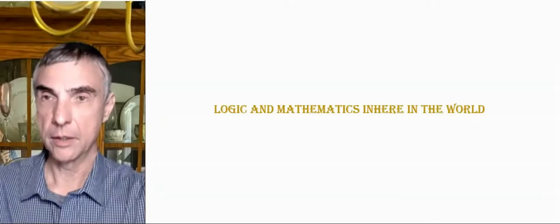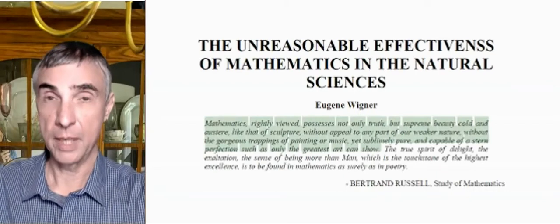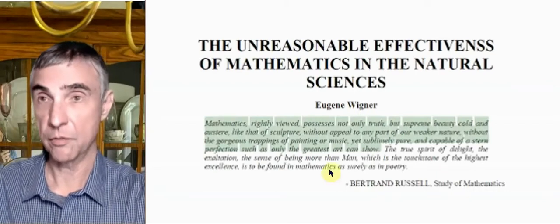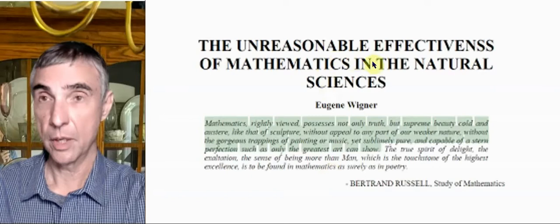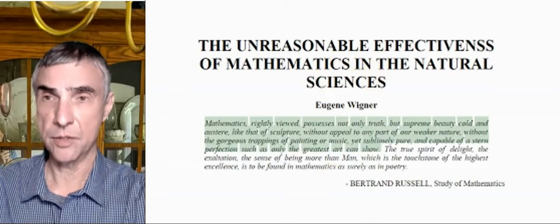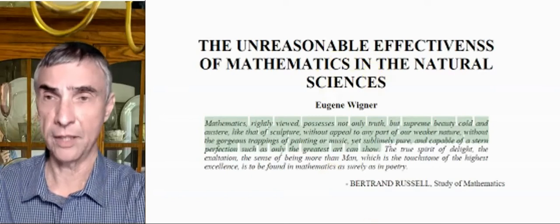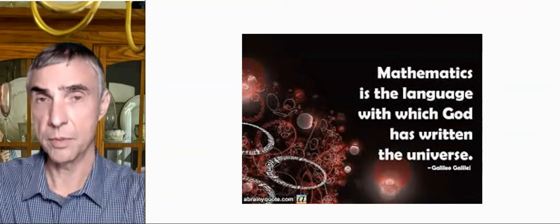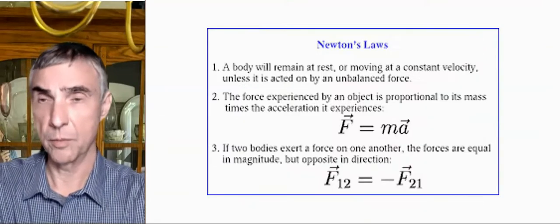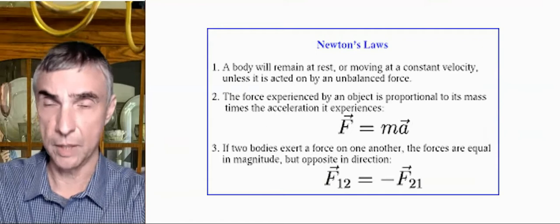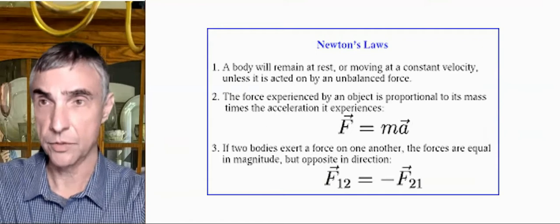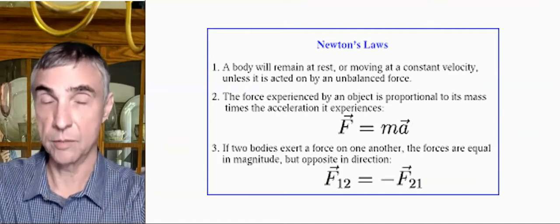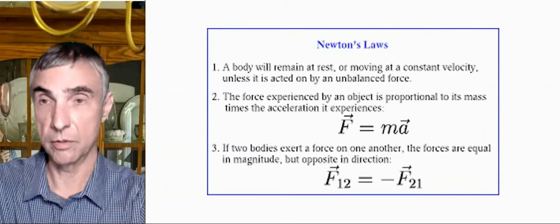To begin, physicists have wondered why mathematics describes the world so well. Here's a rather famous paper. And the gist of it is that mathematics is unreasonably, inexplicably effective in describing the physical world. Galileo said that mathematics is the language in which God has written the universe. Now, why should that be so? By the way, here are some physics equations that describe the universe. Newton's famous law is f equals ma. That's just a simple multiplication, although a derivative is involved there.